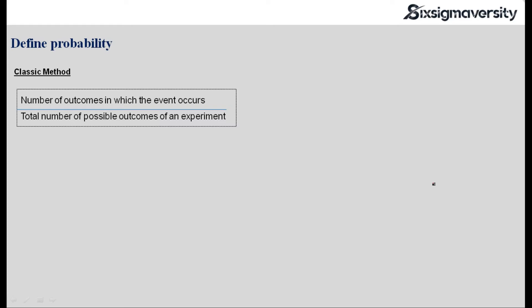Now before we move ahead, you might have a question in your mind: why do we learn probability in Six Sigma? The use of probability as a concept is used in the next session when we discuss about probability distributions, which is a basic understanding that you need to carry when we do hypothesis testing and multiple other tests used in solving the problem.